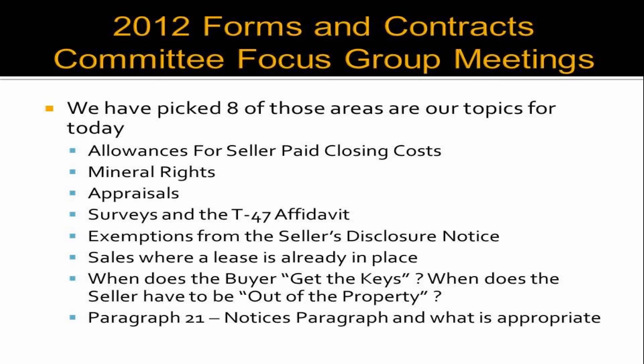The eight topics are: allowances for seller-paid closing costs — that is, costs the seller pays on behalf of the buyer; mineral rights and related disclosures and addenda; appraisals and how they interact with paragraph 4A1; surveys and the T-47 affidavit; exemptions from the seller's disclosure notice; sales where a lease is already in place; when does the buyer get the keys and when does the seller have to be out; and finally paragraph 21 notices. Let's dive in.